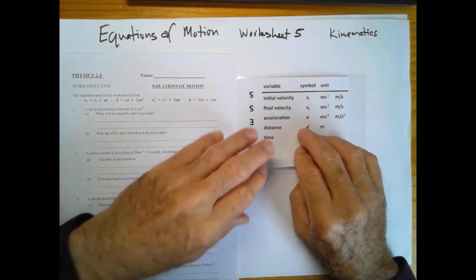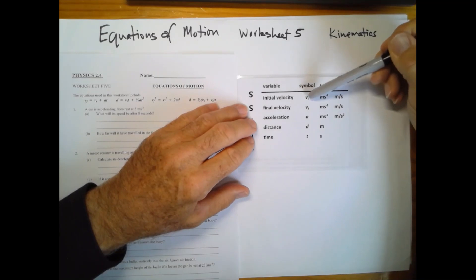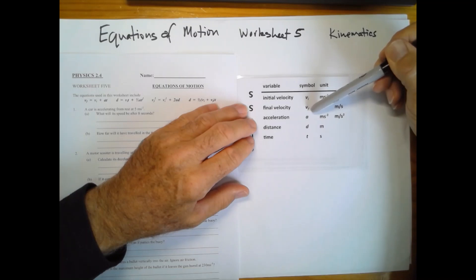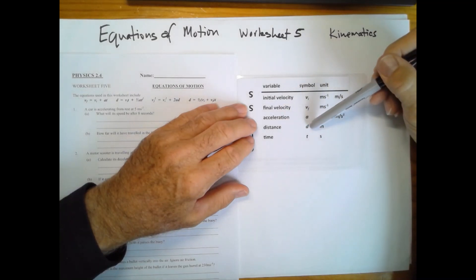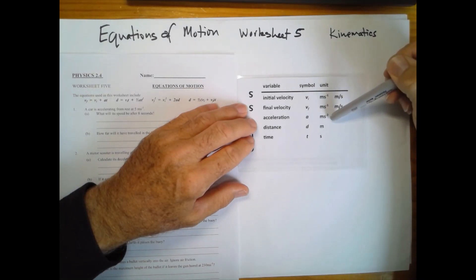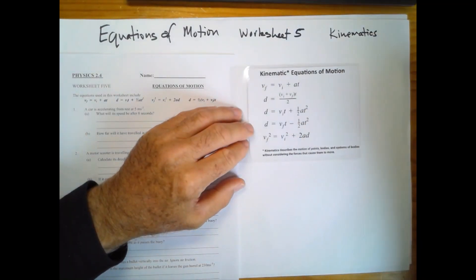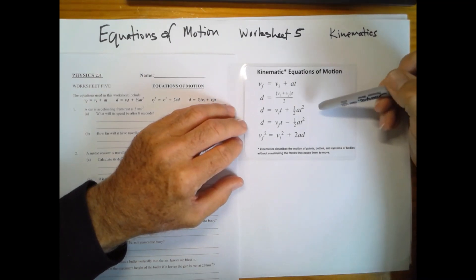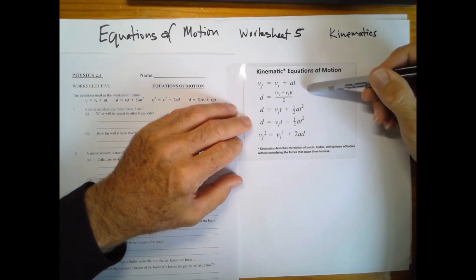One of them is we need to be sure about our symbols and units: initial velocity v-subscript-i, final velocity v-subscript-f, acceleration a, distance — we may call it displacement as well — d, and time t. The units for those are meters per second for velocity and meters per second squared for acceleration. Second, we need to remind ourselves of the four equations of motion, the four kinematic equations that will be given in the exam.